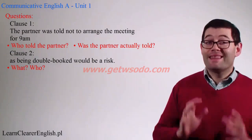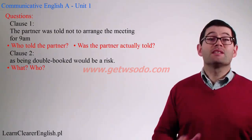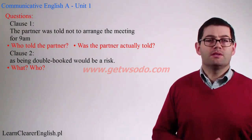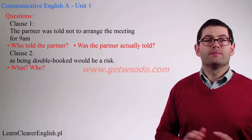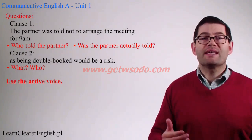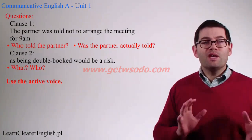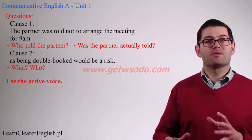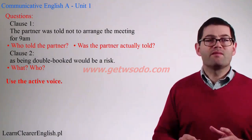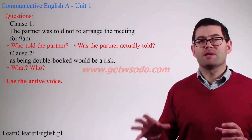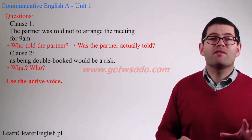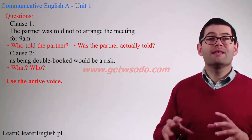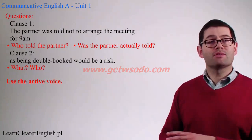We can see that in this case, the passive voice is not helpful at all. So, what's the solution? Simple: use the active voice. We can begin to understand why simply by looking at the differences in the structures. The passive voice is object, verb, subject — that is, the thing being affected, how it's being affected (in other words, the action), and then who is doing the action.